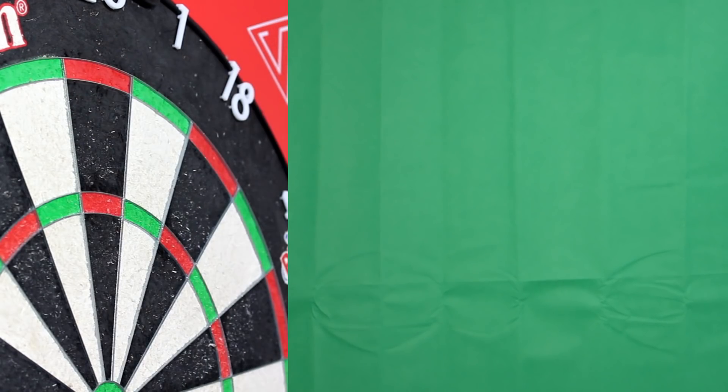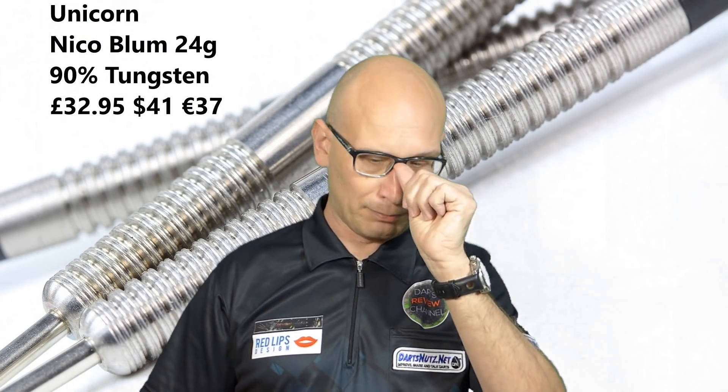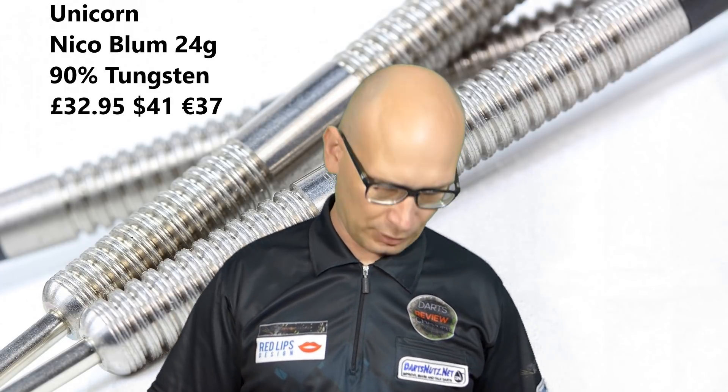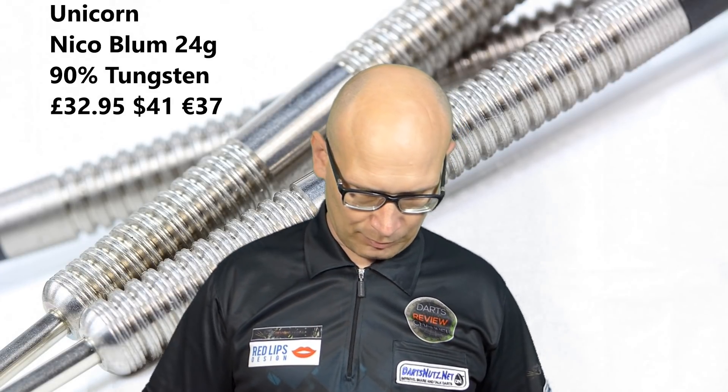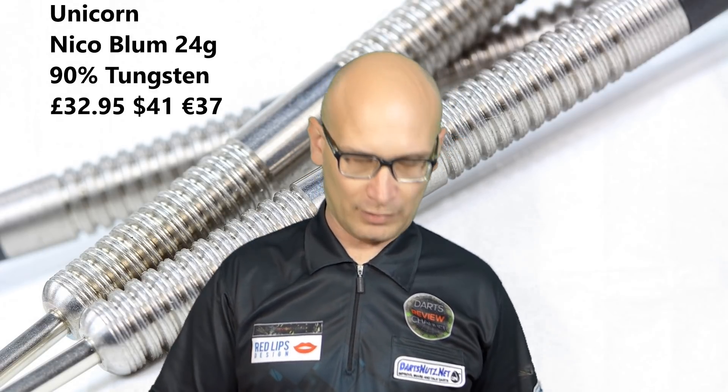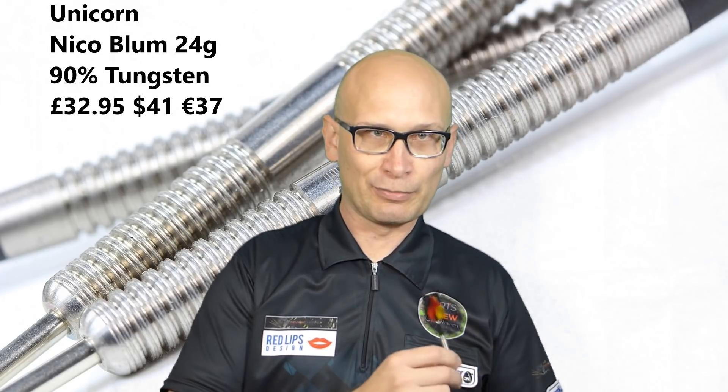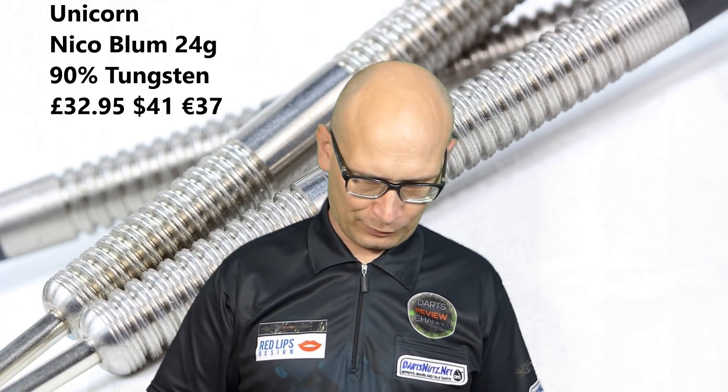So that's the Unicorn Nico Blum 24 gram, I suppose you can call them Phase 2. Like I said, I did like the other ones when I started to play with them more, and even though the barrel was quite long and thin, which is not normally suited to me, I got quite good with them after a while.